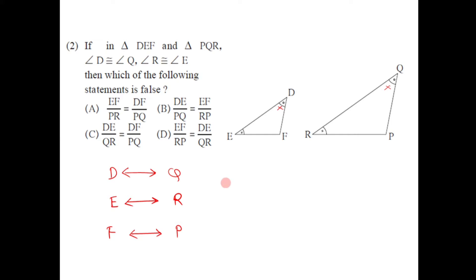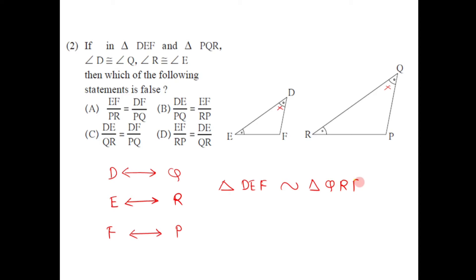So the one-to-one correspondence between the vertices is: triangle DEF is similar to triangle QRP, since the corresponding vertices of D, E and F are Q, R and P. These two triangles are similar by the AA test. Now, according to this correspondence, we have to choose the wrong alternative among the four.